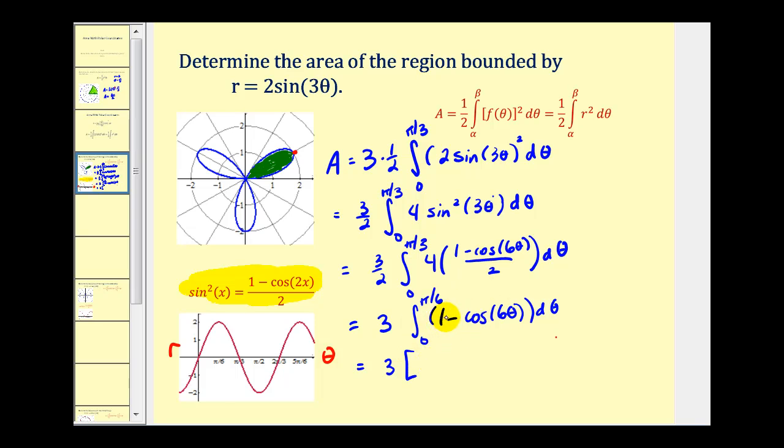Well, the anti-derivative of one with respect to theta will be theta. When we integrate cosine six theta, we are going to have to perform u substitution, where u is equal to six theta, du is equal to six d theta. So we're going to have an extra factor of one-sixth here. We'll have one-sixth sine six theta.